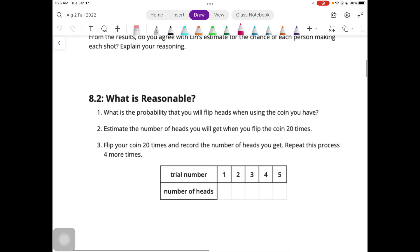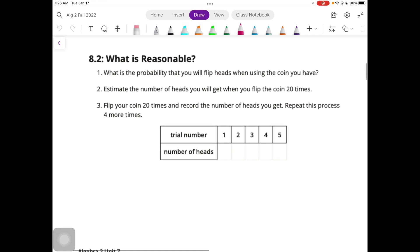All right, let's take a look at 8.2. What is reasonable? What is the probability that you will flip heads when using a coin? So you might have a physical coin. If not, we have an applet that we're going to use. So what is the probability that you will flip heads on a fair coin? And so that probability is one-half or 50%. Because there's a 50% chance that it will land on heads, 50% chance that it will land on tails.